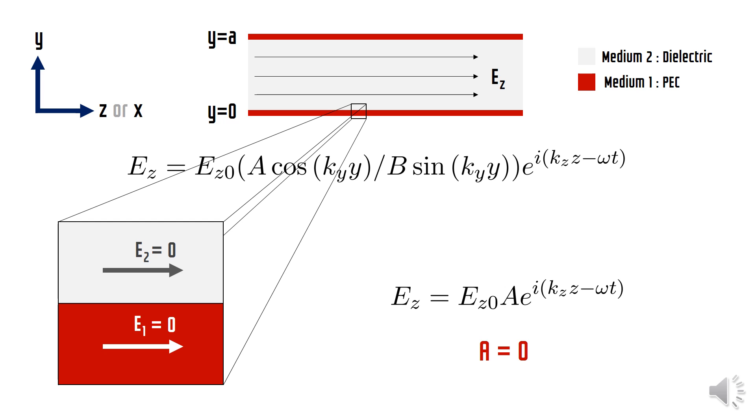Putting this in the general equation, we see that the general expression cannot have a cosine term. The final expression comes out to be this, where the constant B has been included in the Ez0 term. The same could be obtained for Ex or any field in the XZ plane.